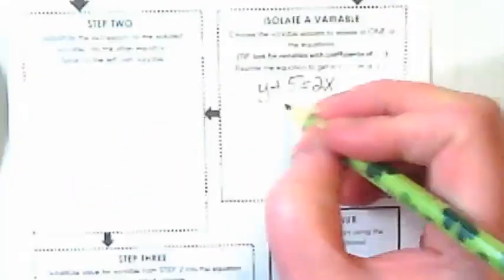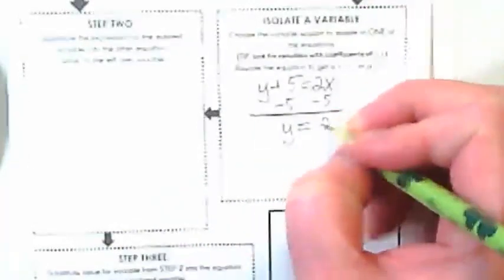So let's rewrite this equation: y plus 5 equals 2x. And what do we need to do to get it by itself? We're going to subtract the 5 from both sides and we get y equals 2x minus 5.